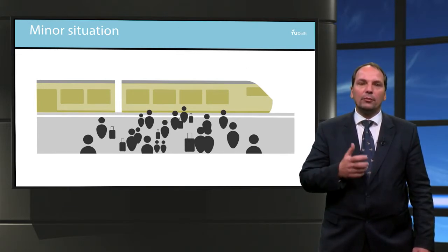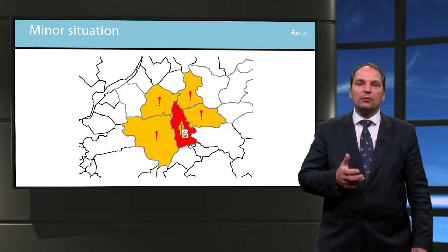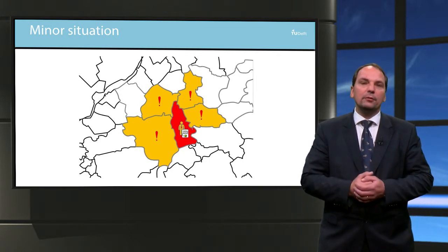Rescheduling is required to obtain an executable plan. The effect remains local and the train dispatcher is able to reschedule the plan himself, but it could affect surrounding regions as well. So the train dispatcher at these regions are notified of the incident.